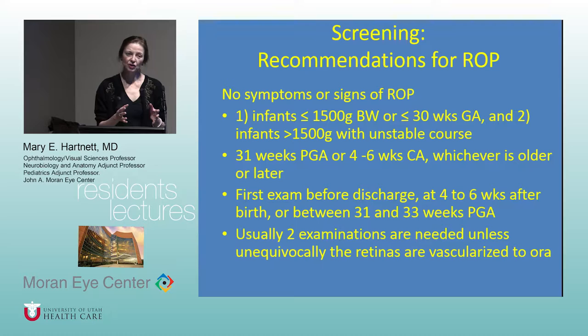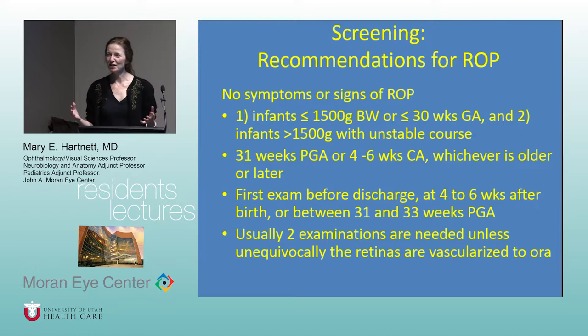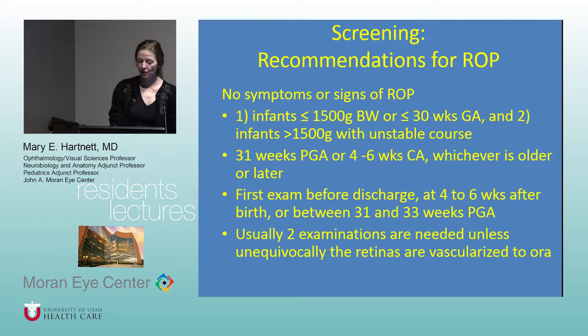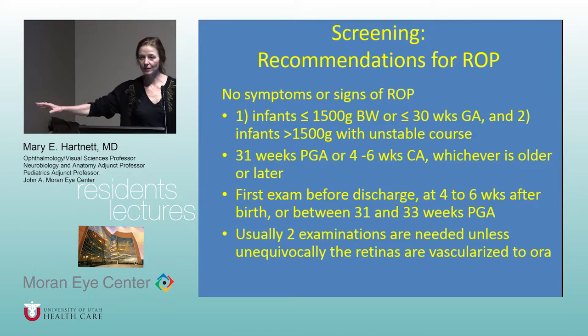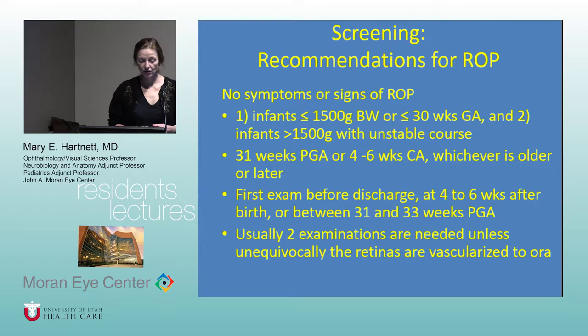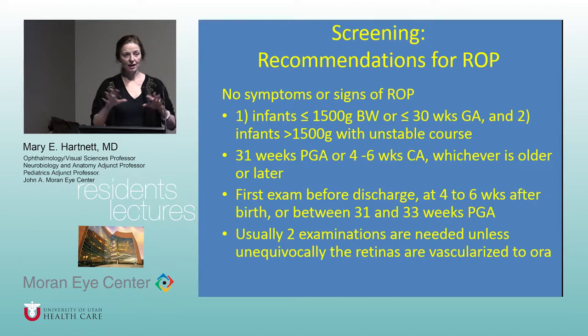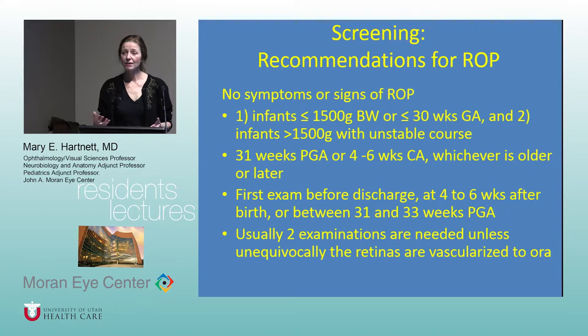We start screening examinations at 31 weeks post-gestational age — that's gestational age plus chronologic age — or four to six weeks chronologic age. For example, if you have a 24-week gestational age baby at four weeks of age, they would be 28 weeks post-gestational age. We always try to have the first exam before discharge, because once the family and infant get out without being established with an eye doctor, they could get lost. Usually two examinations are needed to confirm retinas have vascularized to the ora serrata before we say there's no risk of ROP.